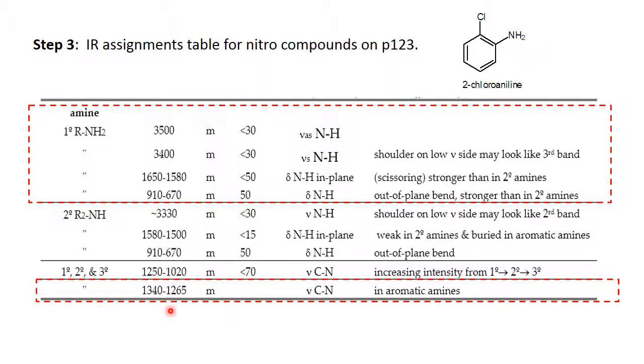And then all amines, primary, secondary and tertiary will have a C to N stretch. In the case of an aromatic amine like we are using here, that occurs somewhere between 1265 and 1340 wavenumbers.